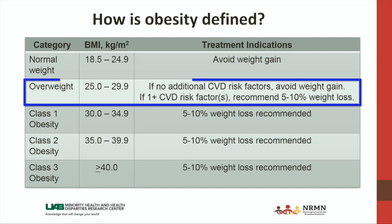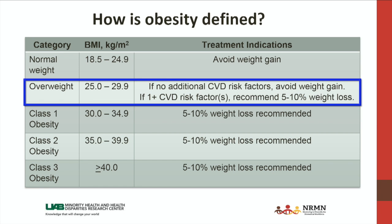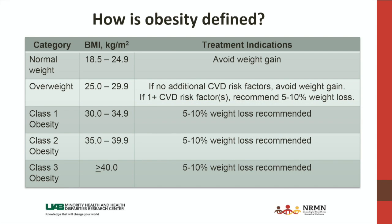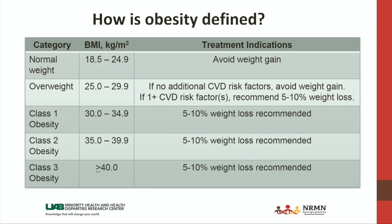Moving into the overweight range, that's a BMI between 25 and 29.9. The main goal there is to avoid additional weight gain if there are no other comorbidities present. But the current recommendations are that if someone is overweight and has one or more additional risk factors for cardiovascular disease — things like high blood pressure, high cholesterol, or a larger than recommended waist circumference — then weight loss would be recommended. The current guidelines call for a weight loss between 5 and 10 percent of body weight.